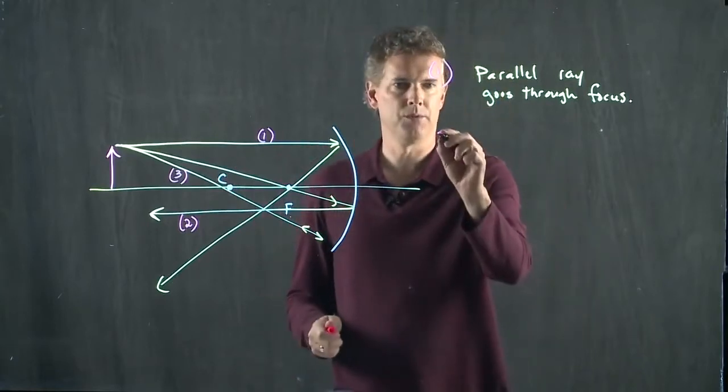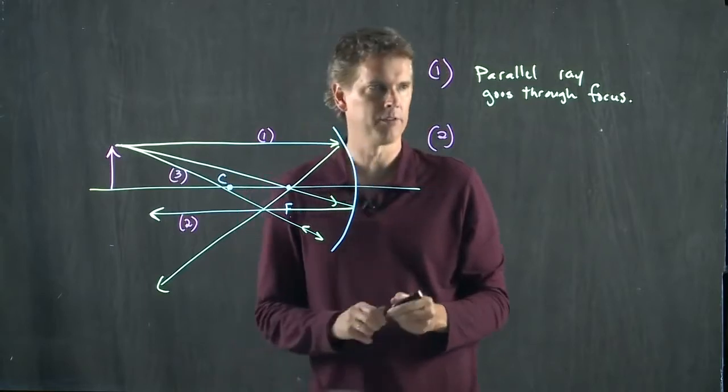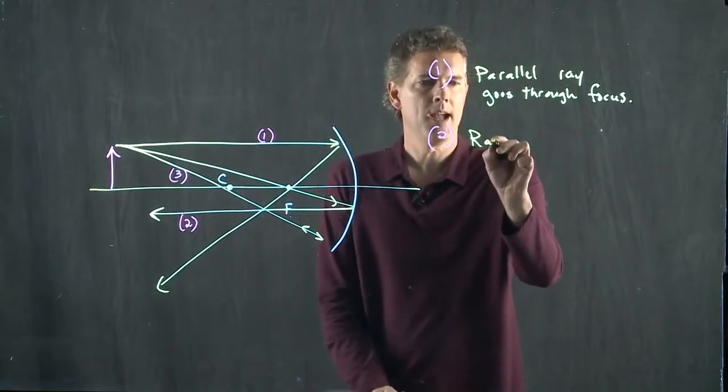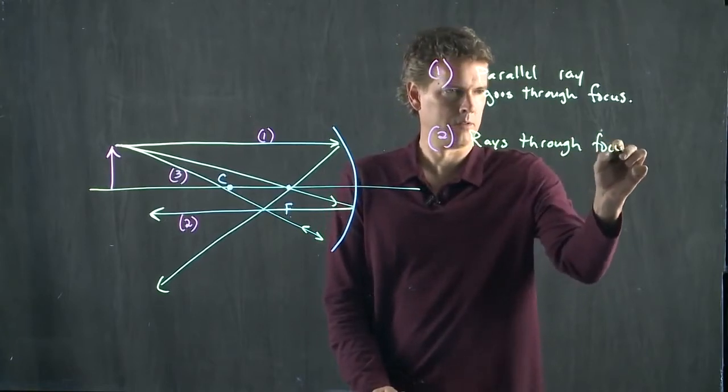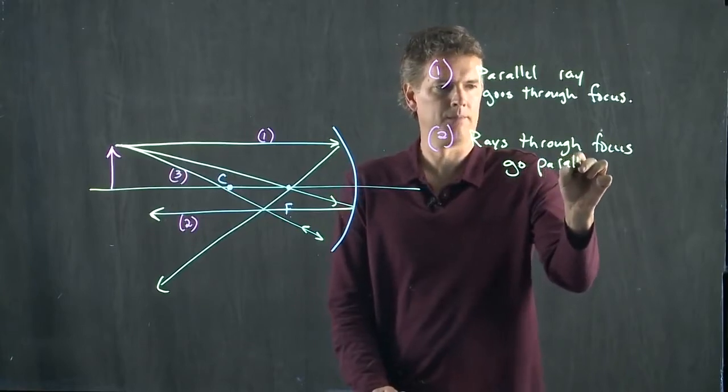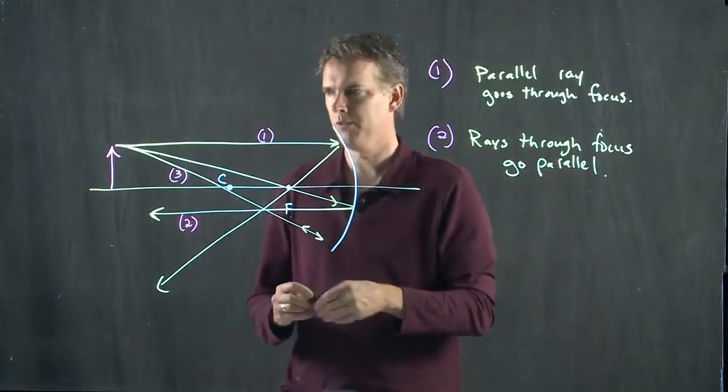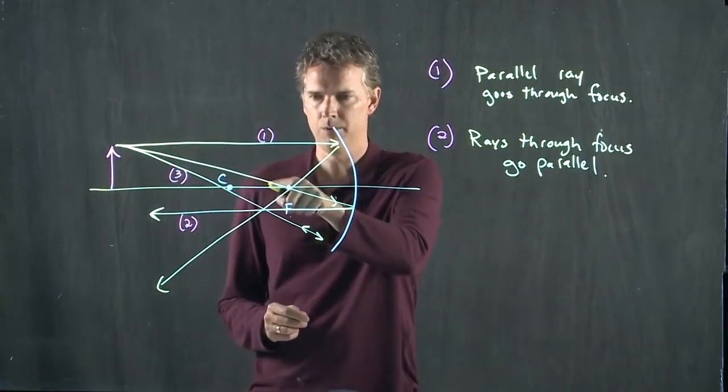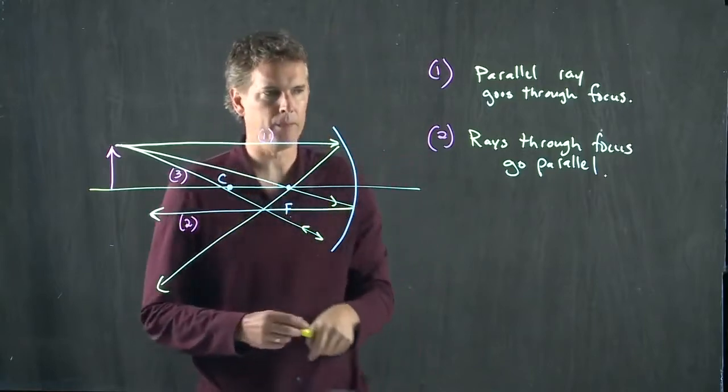What about number two? Number two is really just number one in reverse. Rays through the focus go parallel. Number two was this one that came right here. It went through the focal point, bounced off the mirror, and then went parallel back.